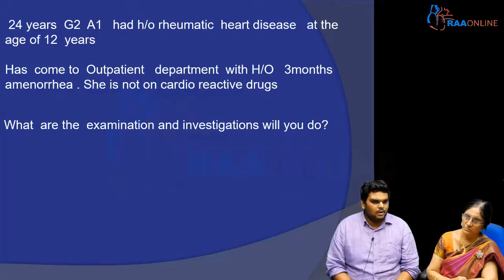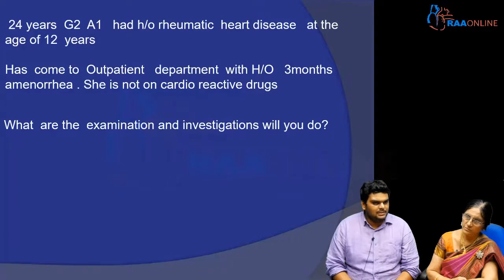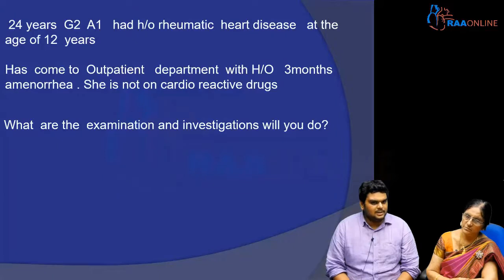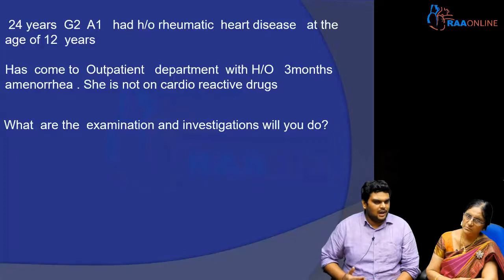Followed by that, I would like to do a systemic examination of the cardiovascular system, where I would like to check for the apical impulse and see if there are any murmurs or palpable thrills associated with her cardiac disease. I would also do a respiratory system examination to check if there are bilateral basal crepitations indicative of cardiac failure, and an abdomen examination to see if there is tender hepatomegaly suggestive of cardiac failure, and splenomegaly to rule out infective endocarditis.